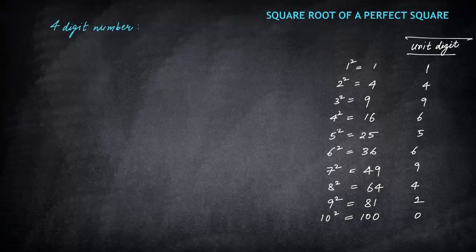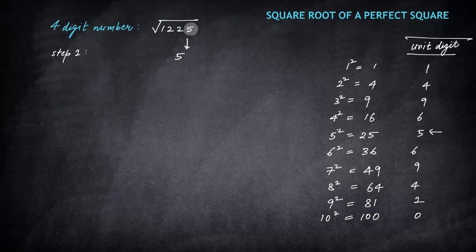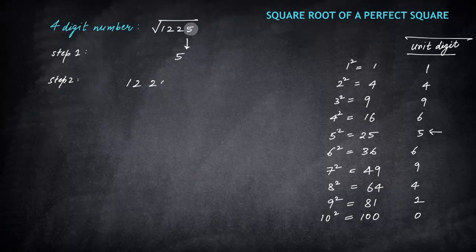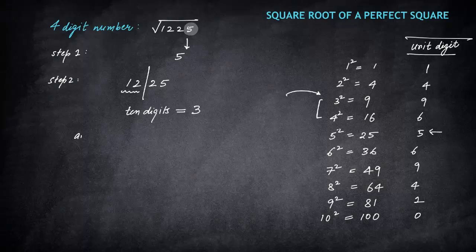Now let's extend to four-digit numbers. Take 1225. Step 1: unit digit is 5. Since 5 appears only once in the unit digit column — for 5 squared — the unit digit is fixed as 5. Step 2: split to get 12. Since 12 lies between 9 and 16, we take the smaller integer 3 as the tens digit. The answer is 35, and 35 squared is 1225.